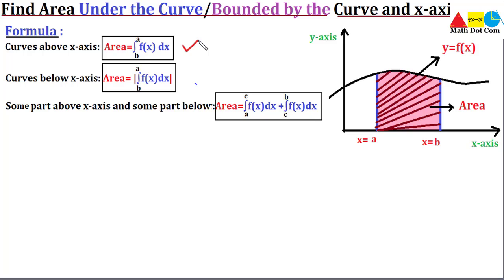If the curve is below the x-axis, the y values are negative, so you will get a negative result. To avoid a negative area, we take the absolute value (mod) of the answer, giving a positive value for the area. If some part of the curve is above the x-axis and some part is below, you have to divide the curve into two parts, each with different limits.